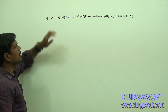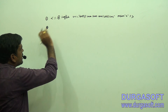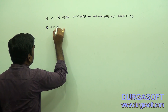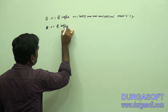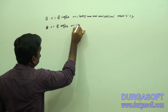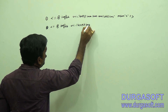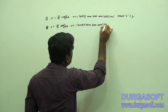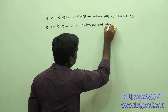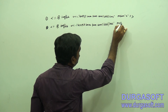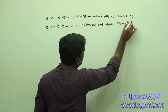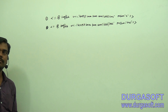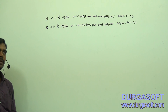One more is there - the advanced URI. That is: percentage at the rate of taglib, URI is equal to http://java.sun.com/jstl/sql, prefix is equal to sql. This is the advanced URI; the first one is the basic URI.